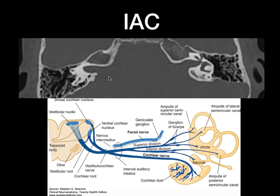Coming to the internal auditory canal — always look at the size and compare bilaterally and symmetrically. In cases of acoustic schwannomas, there will be widening of the bony internal auditory canal. The seventh and eighth cranial nerves pass through the internal auditory canal, and schwannomas are the most common cause of internal auditory canal enlargement.